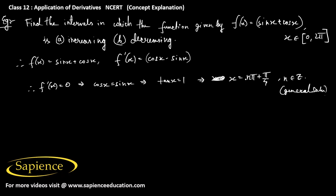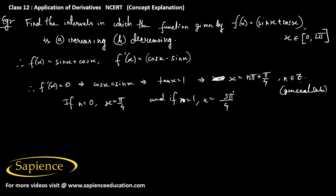We can put n as any integer. For n = 0, x = π/4, which belongs to the closed interval [0, 2π]. For n = 1, x = π + π/4 = 5π/4, which also belongs to [0, 2π]. For n = 2, x would be greater than 2π, so we discard it. Therefore x = π/4 and x = 5π/4, since these belong to the given closed interval [0, 2π].